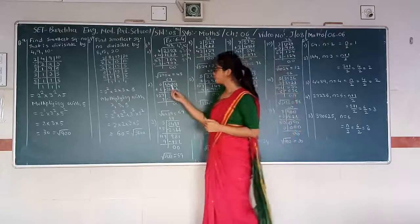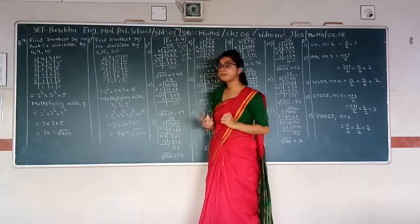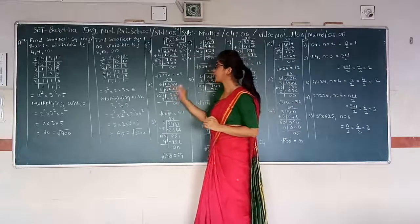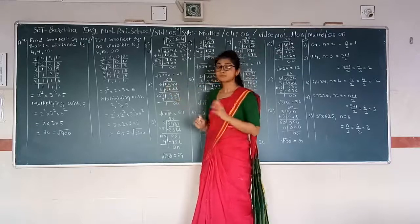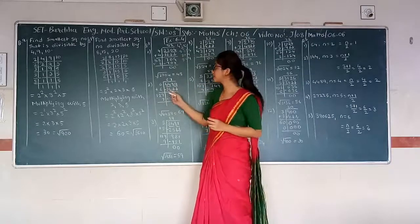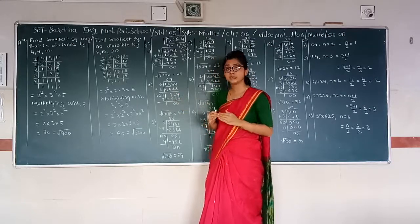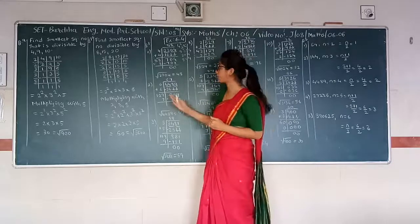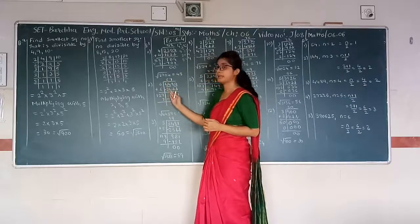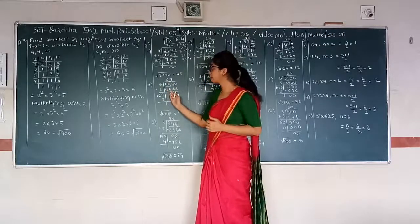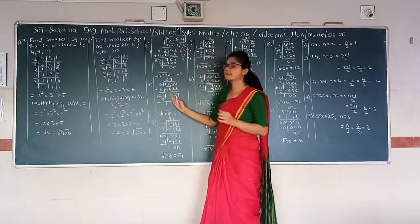Next number: 4489. We divide into pairs: 44 and 89. For 44, the nearest perfect square is 36, which is 6 squared. We write 6 above. 6 times 6 is 36. Subtracting 36 from 44, we get remainder 8.